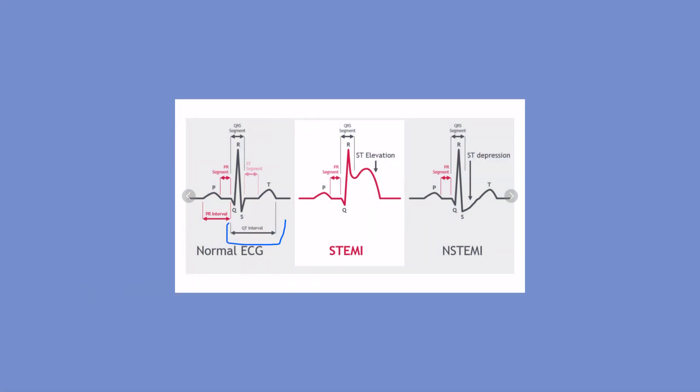Here are three representations: this is the normal ST segment — a flat line. Then ST elevation here, where the S wave jumps up. And over here, ST depression, where the S and T kind of drop and you get a diagonal downward slope rather than a straight line. That's how you distinguish between ST elevation and ST depression — once you remember it, you won't forget it.